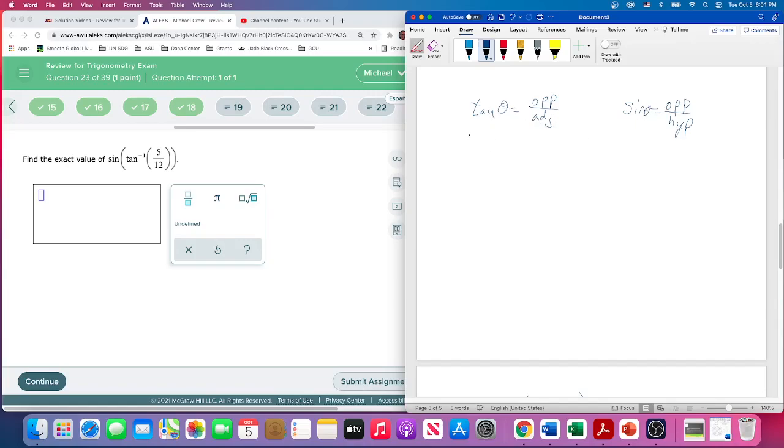What we're given is that the inverse tangent is 5/12ths. So that's telling us what the opposite over adjacent is. Let's draw this triangle.